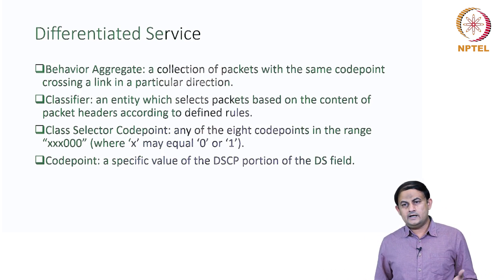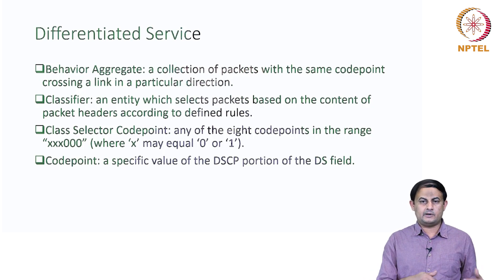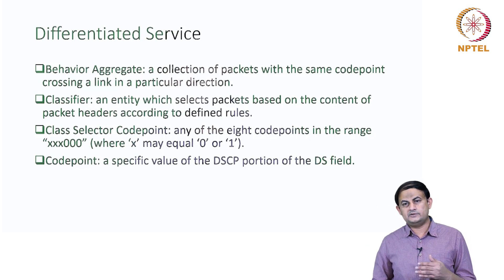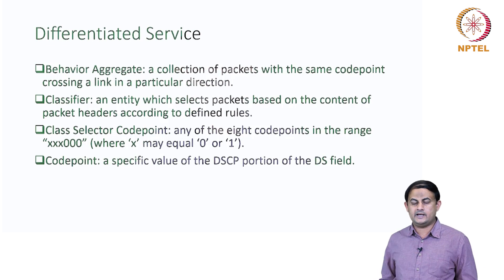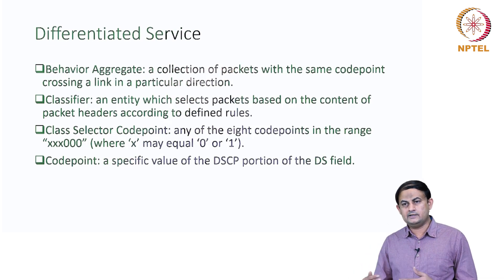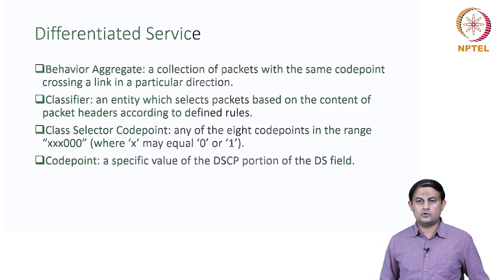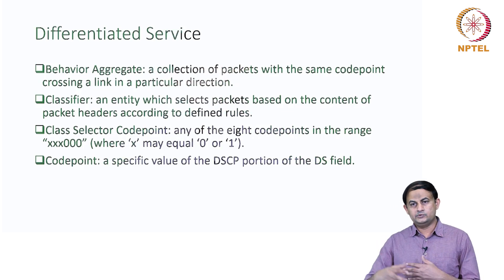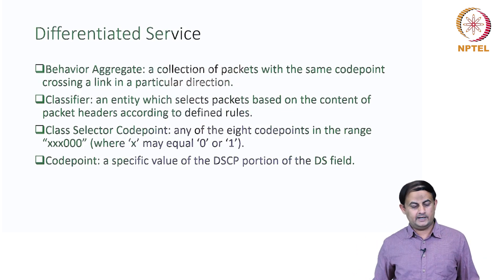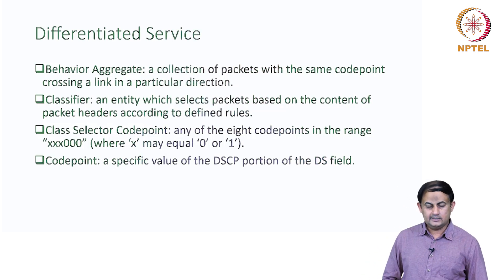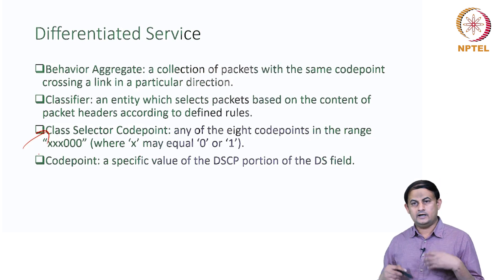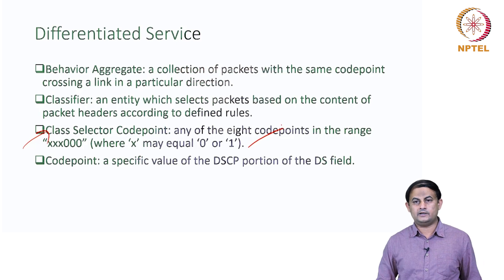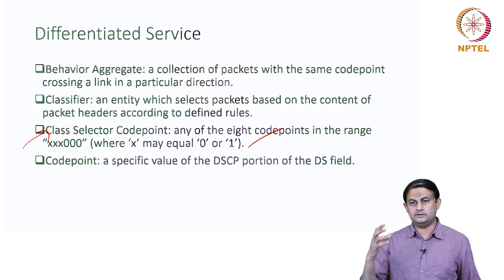How do you assign this code point to packets coming from a particular user or application? There is a classifier sitting at the entry point, which identifies who is transmitting and which application is transmitting, using a bunch of parameters. It selects what kind of code point to assign — that's called the classifier. It might use a set of rules similar to those used in the packet classifier. Once you classify the packet, you assign a code point to that packet — that's called the class selector.